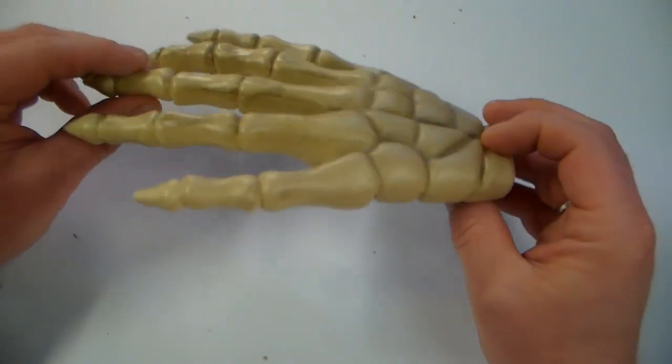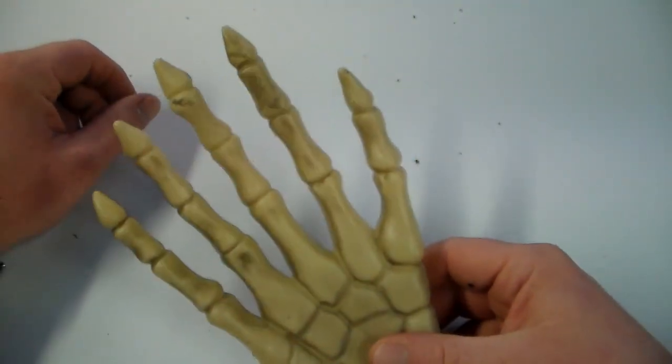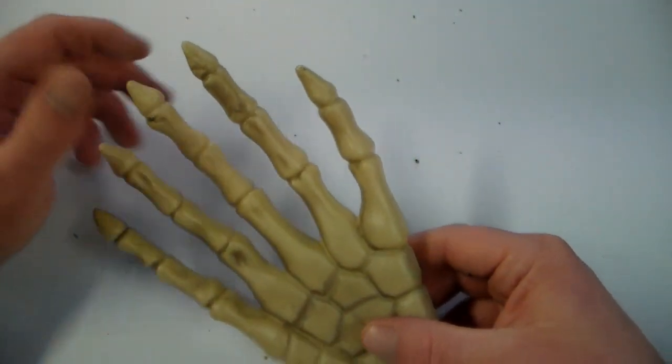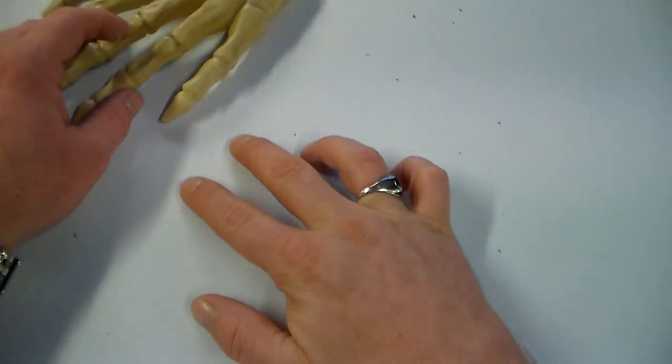So our first thing we're going to do is see if we can actually get this thing to articulate, because as it is it's just kind of in a constant state of giving you a high five. We want to make it look a little more natural and kind of creepy.